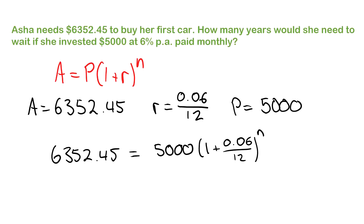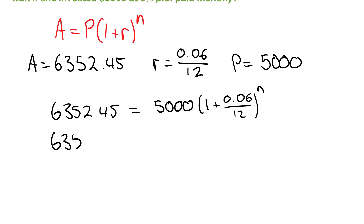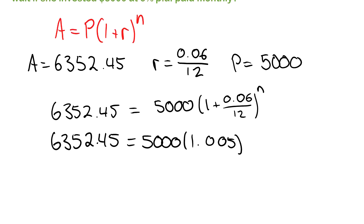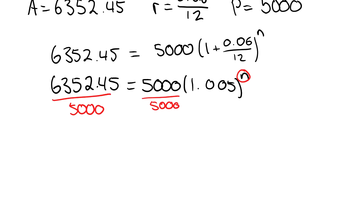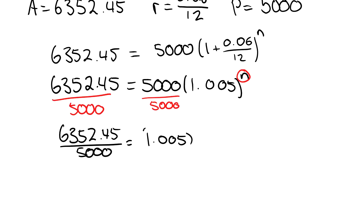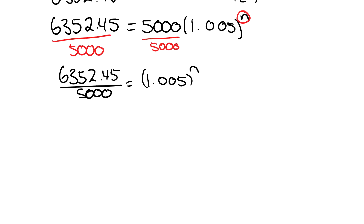We tidy things up: the bracket simplifies to one point zero zero five to the power of n. Then we divide both sides by five thousand to isolate the exponential expression, giving six three five two point four five over five thousand equals one point zero zero five to the power of n. Now we use inverse operations — logarithms — to solve for n.